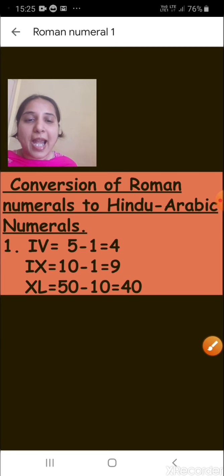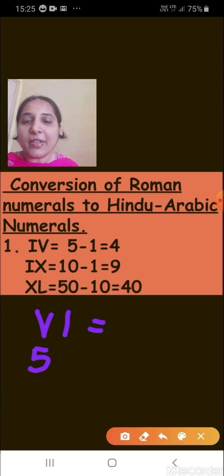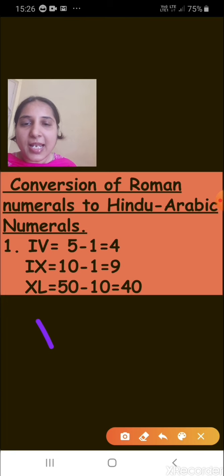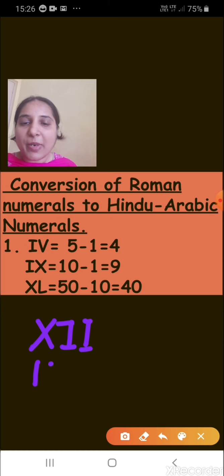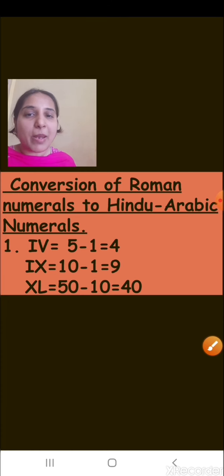On the other hand, when the greater value is before the smaller value, we add. In VI, V represents 5 and I represents 1; 5 plus 1 equals 6, so VI represents 6. Similarly, in XII, X represents 10 and the two I's represent 2; so XII represents 12. These are the key rules to remember while converting Roman numerals to Hindu-Arabic numerals.